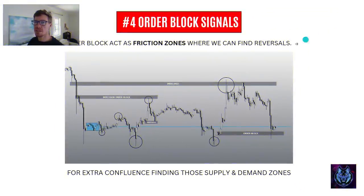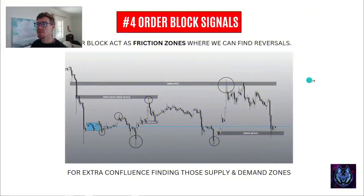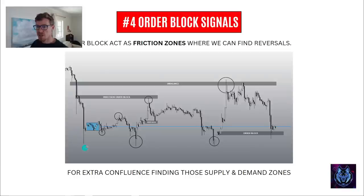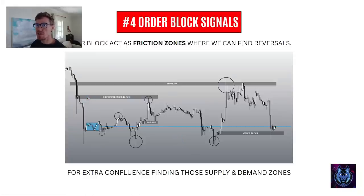Number four: order block signals. Order blocks act as friction zones where we can find reversals — for extra confluence in finding those supply and demand zones. We can see price has broken down in a trending phase to the downside, with this massive rejection showing a reversal. Then we get a contraction zone — we mark it out. As soon as we get the whipsaw up and down, we mark out the expansion line. We also mark out our supply and demand zones because they can act as an extra confirmation on top of everything we've already been going through.